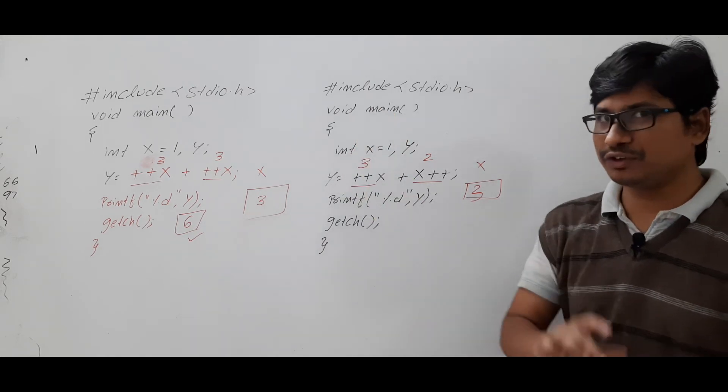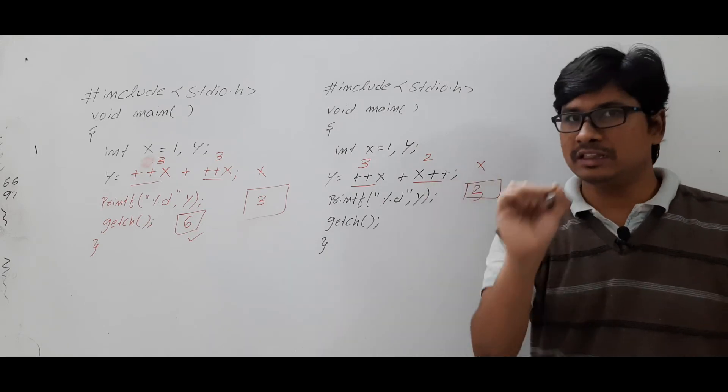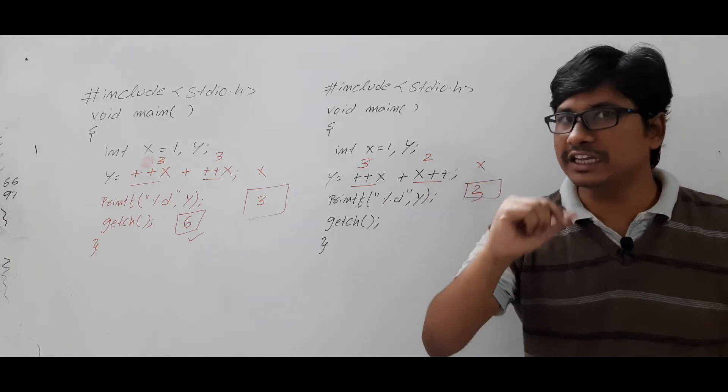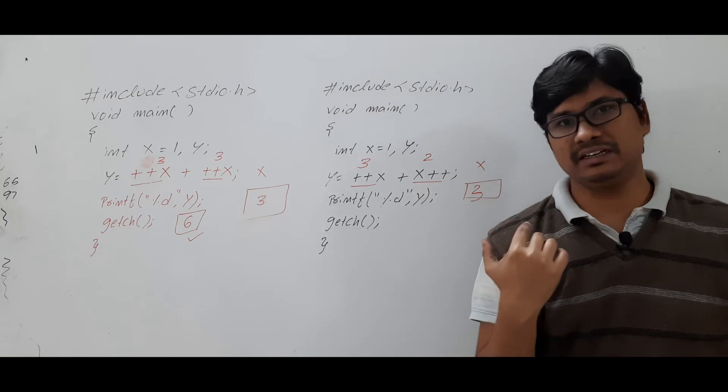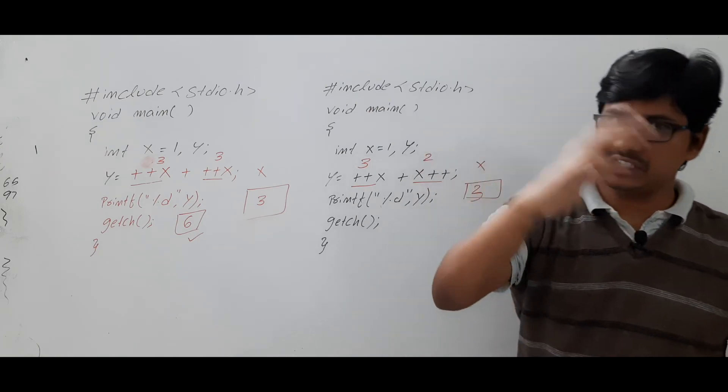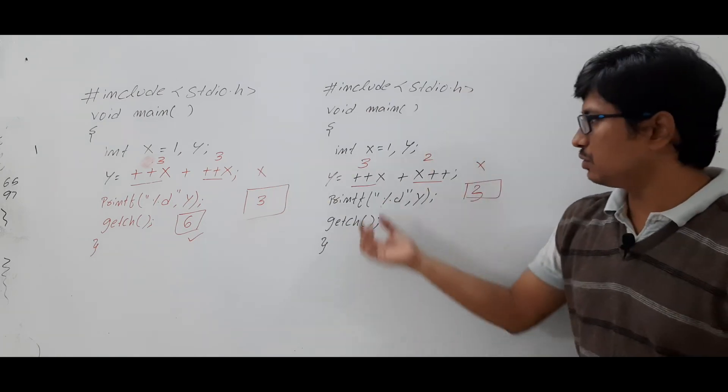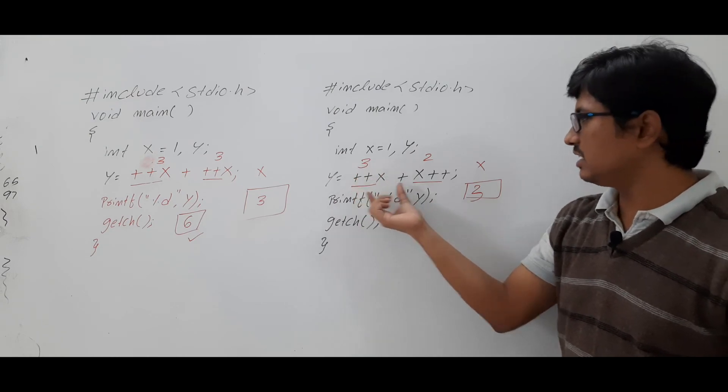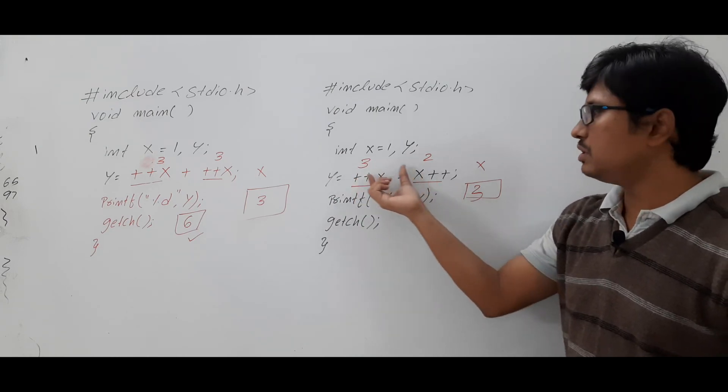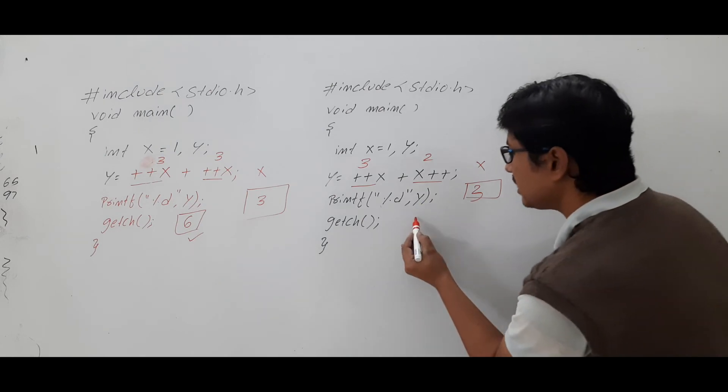I hope you have understood. If you understood the simple logic, the pre-increment is first increment, then assignment. Whereas post-increment, first assign, then increment. So that's why you are getting here 3. Here you are getting 2. So 3 plus 2, you will get 5.